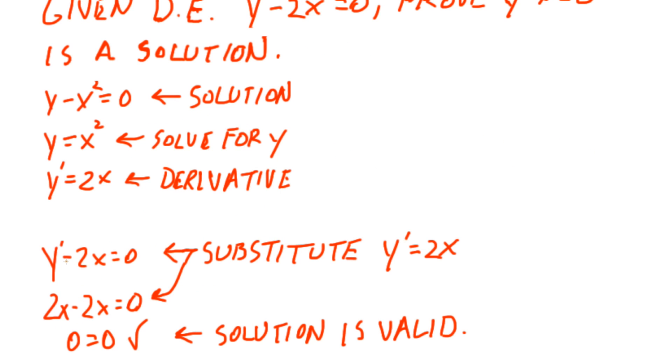When we substitute values, we get 2x minus 2x is equal to 0, and 0 is equal to 0. So the solution is valid.